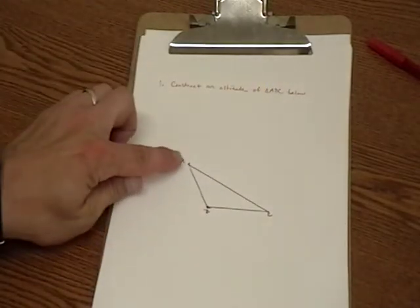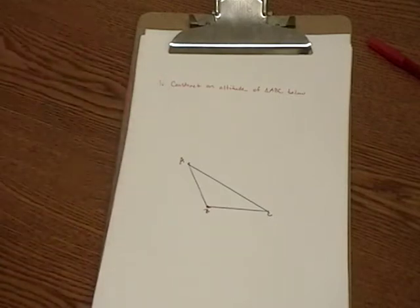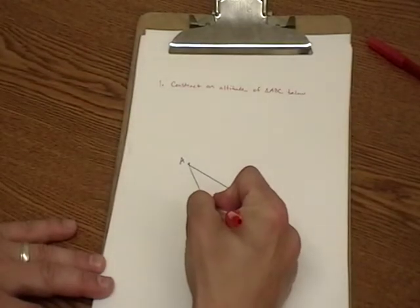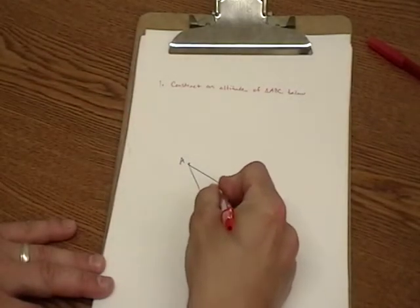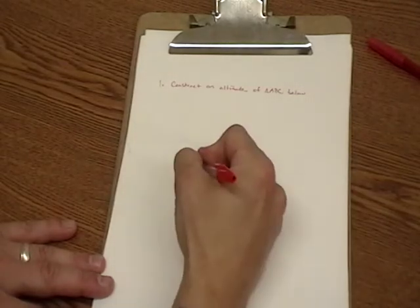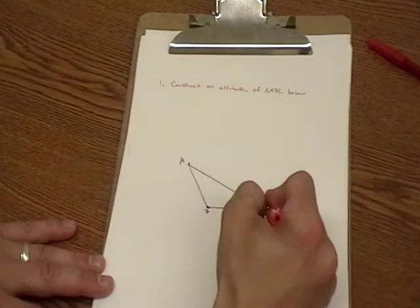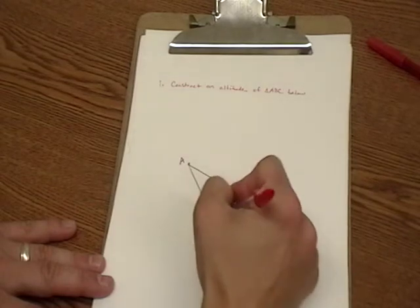In this example, there are three potential altitudes. I could draw an altitude from B over to AC, from A down perpendicular to BC, and from C perpendicular to AB.